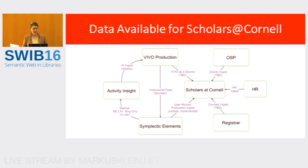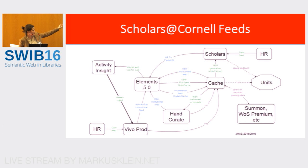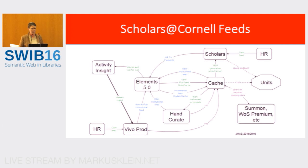We serve that up to Scholars, which is another Vivo instance. There's also a slightly different diagram showing how data gets pushed back and forth, with hand curation. Symplectic Elements 5.0 really serves as the linchpin for data refinement, cleaning, and access point for faculty members to self-curate. Then it goes into a cache and feeds into Scholars. The HR data — covering the person's name and their affiliation within the college — is handled separately and eventually gets pushed back to Elements.